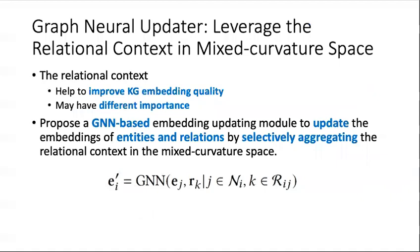Then we introduce our proposed graph neural updater, which leverages the relational context in the mixed-curvature space. The motivation of this module is that recent work shows that relational context helps to improve KG embedding quality, and also the different relational context may have different importance. Based on these two motivations, we propose a GNN-based embedding updating module to update the embeddings of entities and relations by selectively aggregating the relational context in the mixed-curvature space.